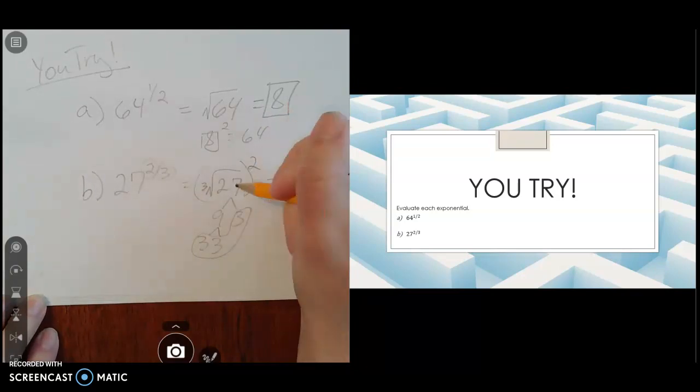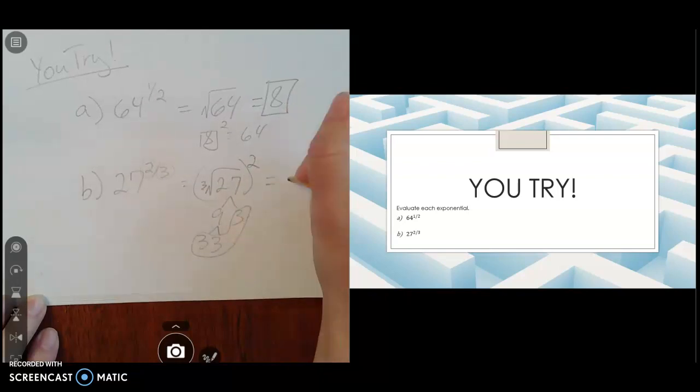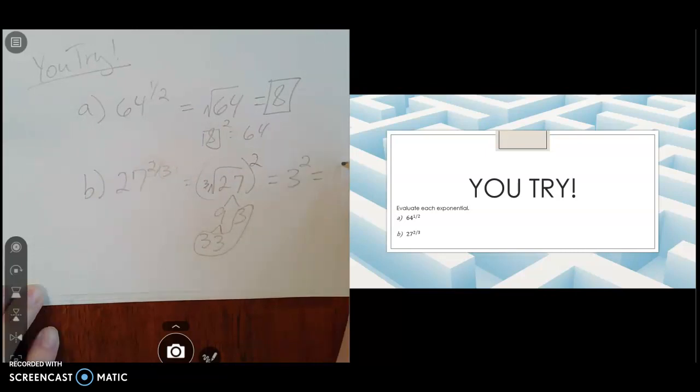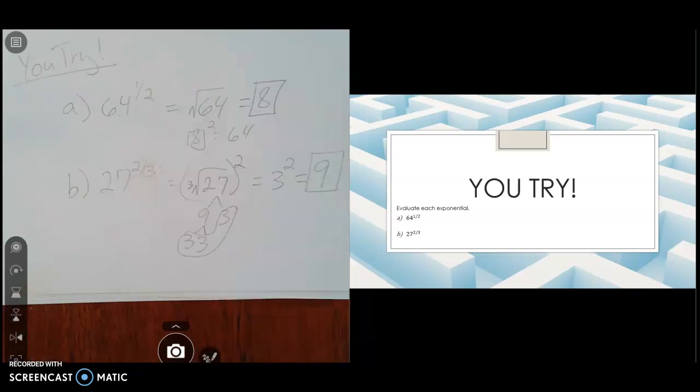So the cube root of 27 is 3. Then our exponent is a 2, so we're going to do 3 squared, and 3 to the second power is 9. And that's what these two look like when you evaluate them.